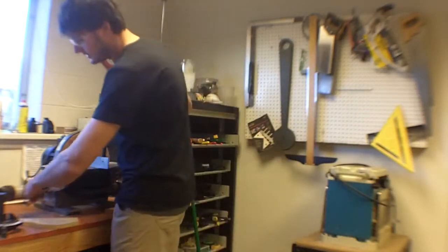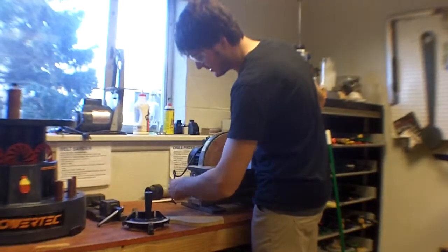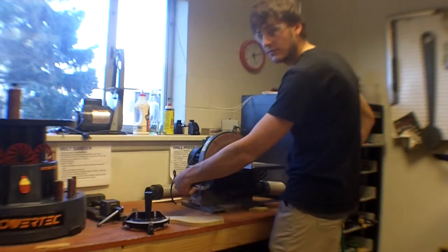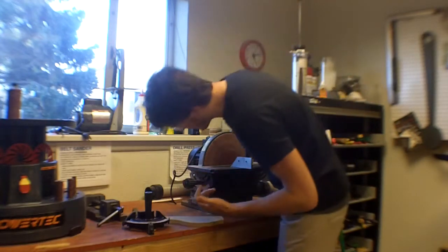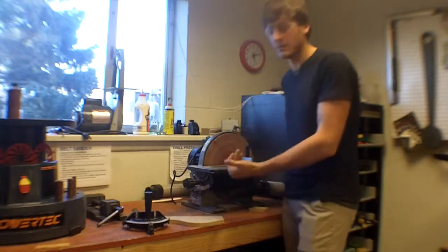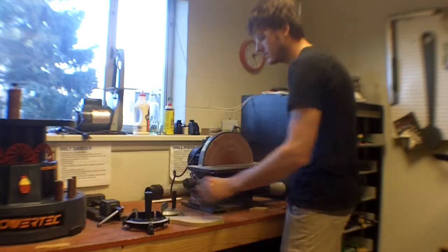It's fairly simple. This is the tightening knob, so you loosen it and then you rotate this. It'll do, I think, 45 degrees in each direction, either away or towards you.